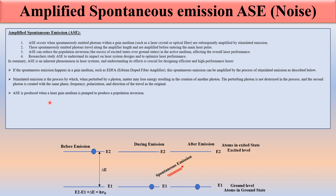ASE is produced when a laser gain medium is pumped to produce population inversion. When we use a pump laser, a large number of electrons move to the excited state from the ground state, and spontaneous emission starts to occur — electrons automatically start decreasing from the higher state to the lower state. As more electrons move to the higher state, the spontaneous emission process also increases, and hence it is called amplified spontaneous emission, which is the main cause of noise in the EDFA.